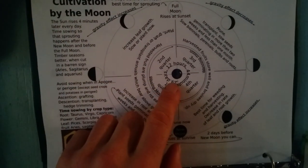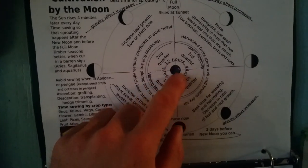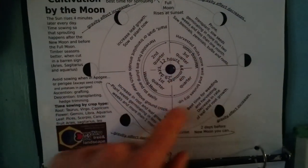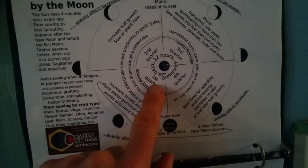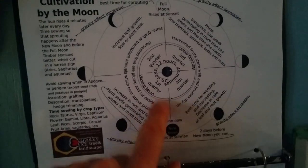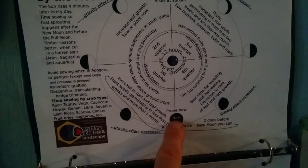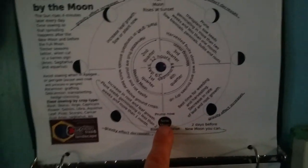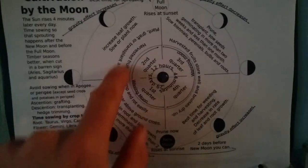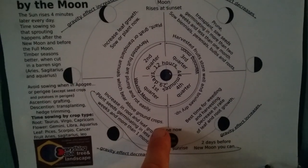So here it talks about 29 days, 12 hours, 44 minutes for the moon to do a complete phase from first quarter, second quarter, third quarter, and fourth quarter back to new moon. Here's the new moon. This calendar shows what kind of cultivation things we can be doing.